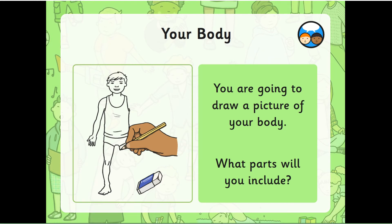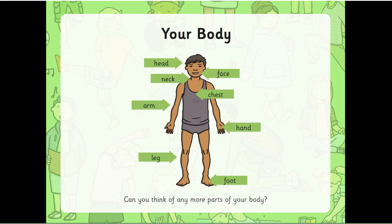Now on your paper you are going to draw a picture of your body. What parts will you include? Maybe you'll start drawing your head first and add on the features such as your eyes, your nose, your hair, and your mouth. Then maybe you can draw your neck. Remember to include two shoulders and your arms with your hands and fingers, your chest and your waist. And then don't forget your legs and your knees and your feet and your toes. See if you can label parts of your body — we've talked about some in this lesson but perhaps you can think of some more.